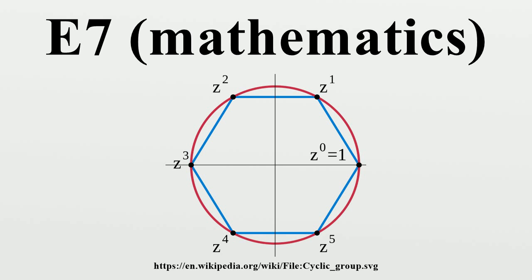The Dynkin diagram for E7 is given by the root system. Even though the roots span a seven-dimensional space, it is more symmetric and convenient to represent them as vectors lying in a seven-dimensional subspace of an eight-dimensional vector space. There are 126 roots.